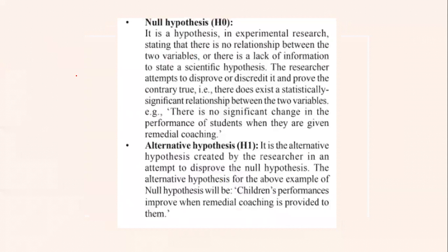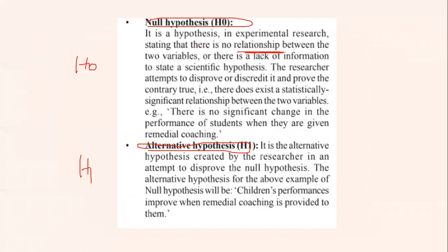There are many types of hypothesis, but basically two types: the null hypothesis and the alternative hypothesis. The null hypothesis is denoted as H0, and the alternative hypothesis is denoted as H1. The null hypothesis states that there is no relation between the variables — maybe it is lacking the information or any statistical information is not available, so it does not prove any relation. For example: there is no significant change in the performance of students when they are given remedial coaching.